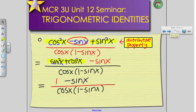What can happen right now? Yes. This 1 minus sine x can cancel with this 1 minus sine x. So I'm left with 1 over cos x. But what is 1 over cos x equal to? Yes.